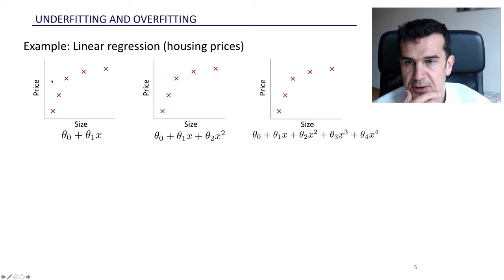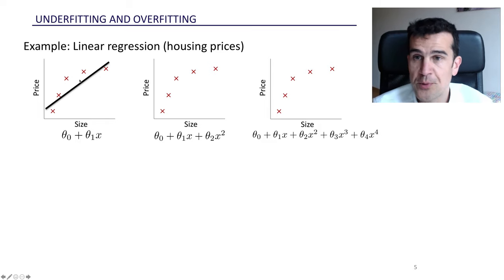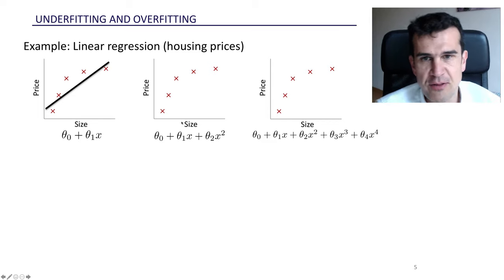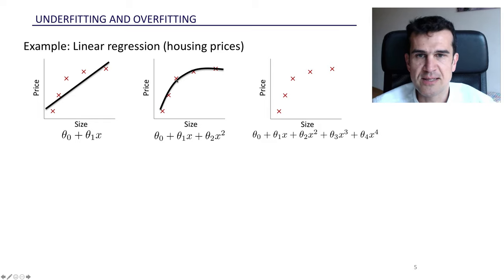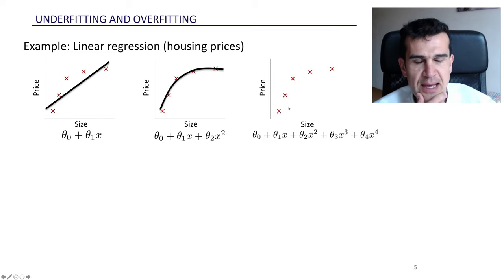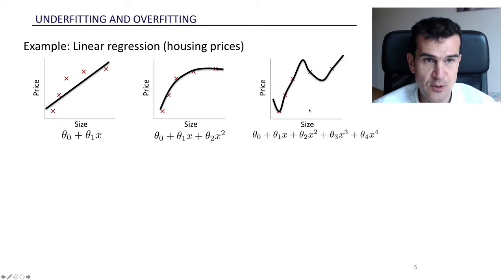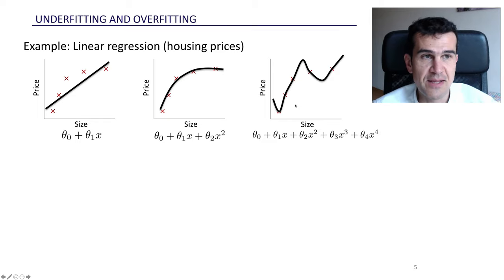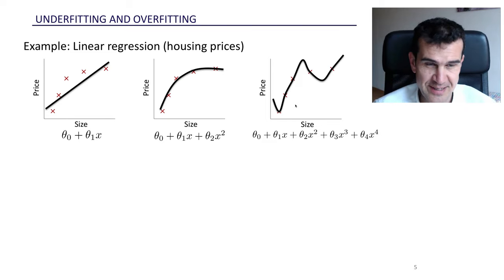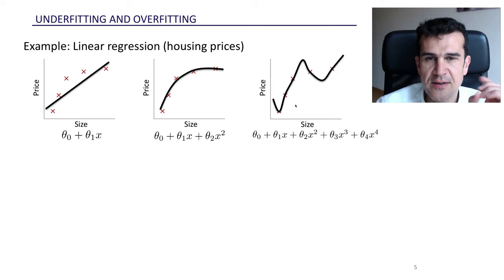If we fit a line on this data we would get something like this. If we fit a polynomial of degree two we're going to see a parabola. And finally, with the polynomial of order four, we have as many parameters as data points — from theta zero to theta four — so we're going to be able to fit a polynomial that goes through each and every point in our dataset. We've got five degrees of freedom and five data points, so we'll nail it for the training set. The key question is: which of these three models would you use to make predictions on new houses?